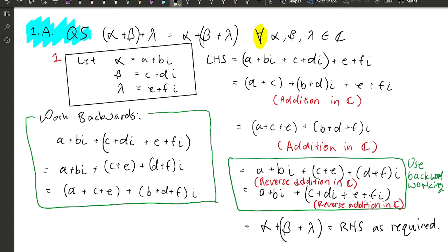We reverse it not this way, but more towards getting our actual result. How we figure that out is we work backwards from our result. This is the result we want: alpha plus beta and lambda in brackets.